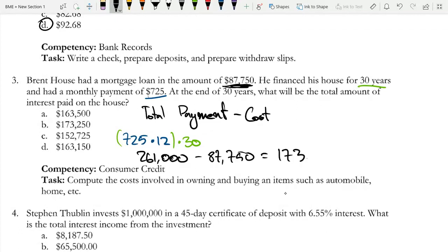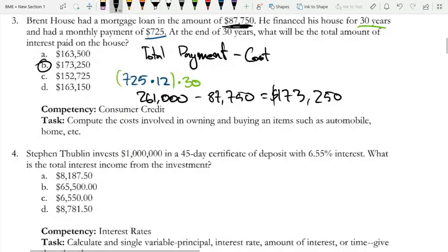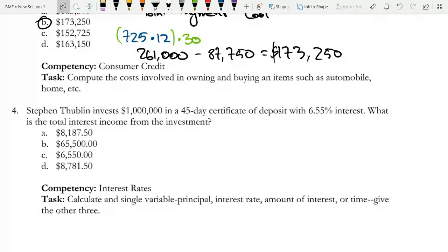And that is option B. Now on to question four. Stephen Dublin invests $1 million in a 45-day certificate of deposit with a 6.55 percent interest. What is the total interest income from the investment? So this is the annual interest, and it is important to note that a banker's year is 360 days, not 365 days. That's an easy mistake to make.